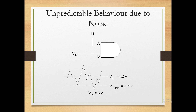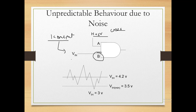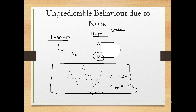Now, unpredictable behavior due to noise: consider we have an AND gate where input A is connected to logic high (+5V), using CMOS technology. Input B is connected to the output of some other IC. The allowable input range is 3.5V to 4.2V. If the signal goes below the minimum allowed range — say down to 3V — then we cannot predict the IC's output.